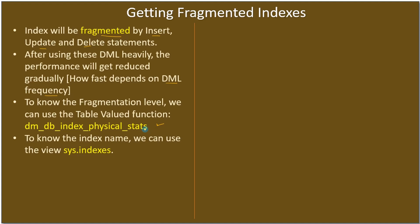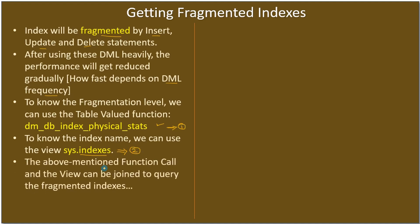To know the index name we can use sys.indexes — that is the schema and view. Both the table-valued function dm_db_index_physical_stats and the view sys.indexes will give us the required result. They can be joined together to query fragmented indexes.